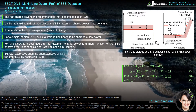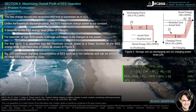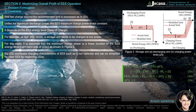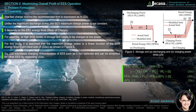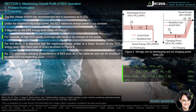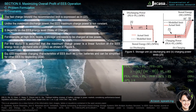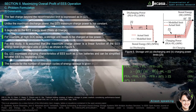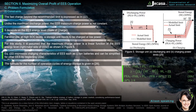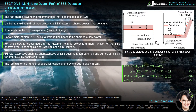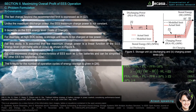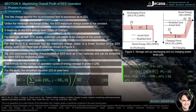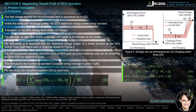Equation 22 expresses charging characteristics of EES such as Li-ion batteries, and can be simplified for other EES types by neglecting equation 22a. The formula for the number of operation cycles of energy storage is given in reference 26. For this study, the simplified equation 23 is used.